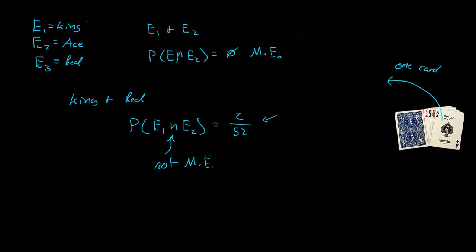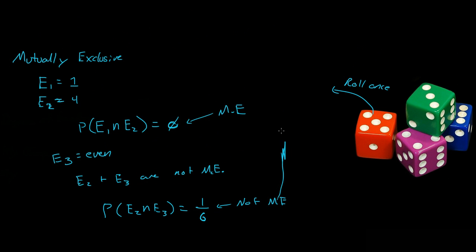Mutually exclusive events cannot occur together. Getting a king and an ace at the same time is impossible. But getting a king that is red is possible, or getting an ace that is red is possible. So mutually exclusive events are events that cannot occur together.